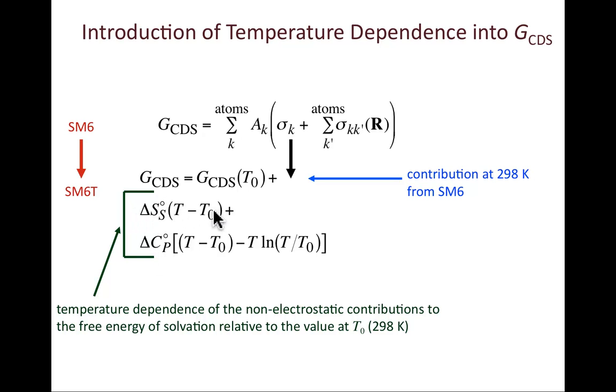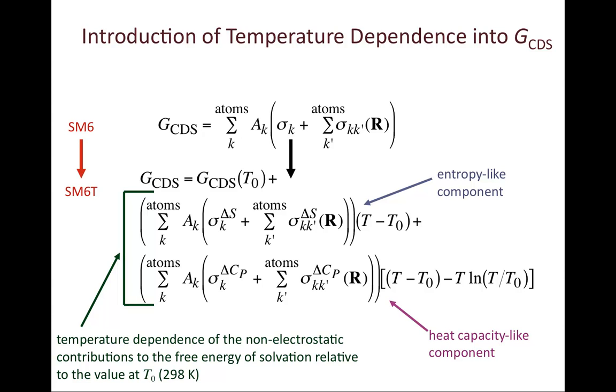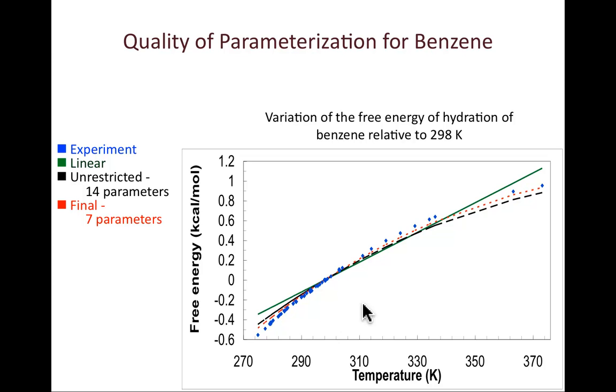So really what we would like to do then is take this is a free energy expression. We want to have new parameters that describe how do these 298 K parameters vary when multiplied times the appropriate function of temperature change. So this is an entropy like surface tension parameter. This is a heat capacity like surface tension parameter. So just as there would be a base 298 K parameter, there would also be an entropy and a heat capacity associated with that. And again this would be derived from experimental data presumably. So here is a graph of some data.